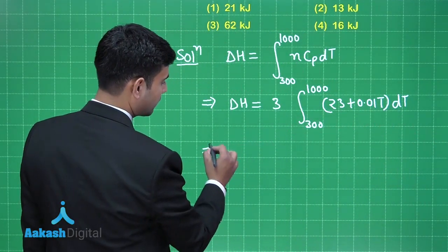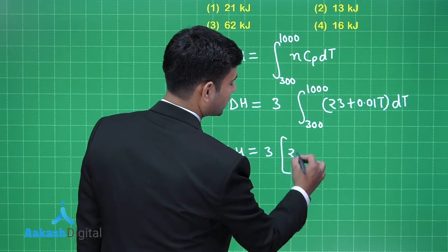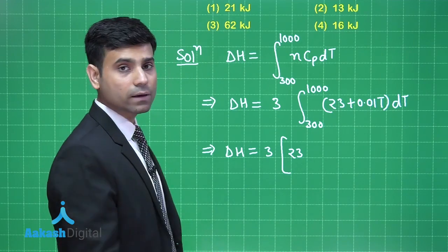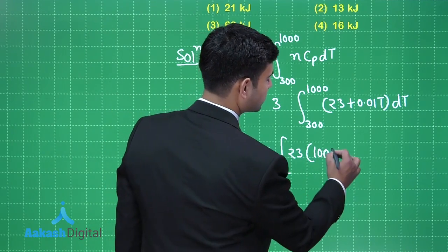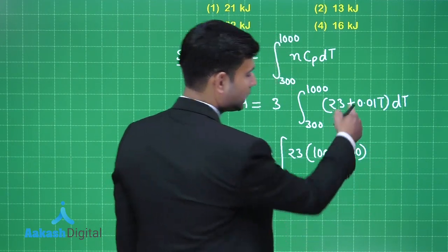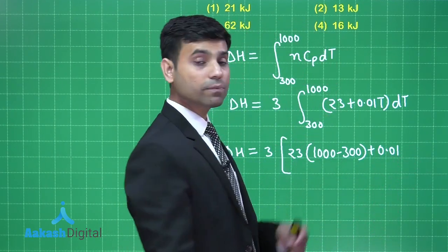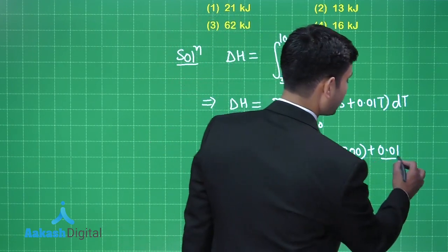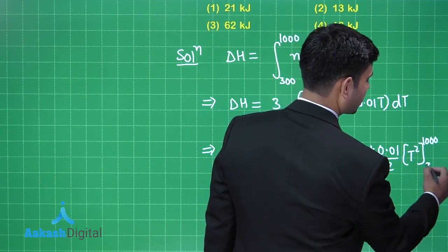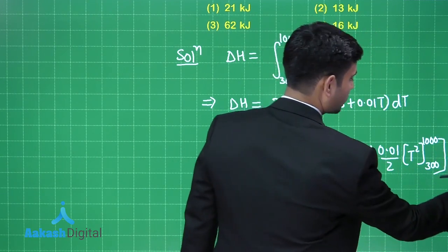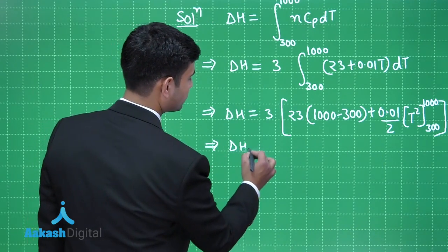Solving the integration: ΔH = 3 × [23 × T] evaluated from 300 to 1000, which gives 23 × (1000 − 300). For the second term, integration of T gives T²/2, so we have 0.01/2 × T² evaluated from 1000 to 300.